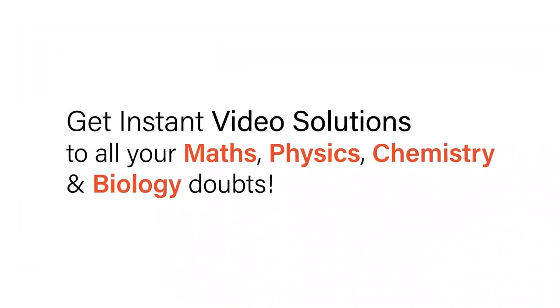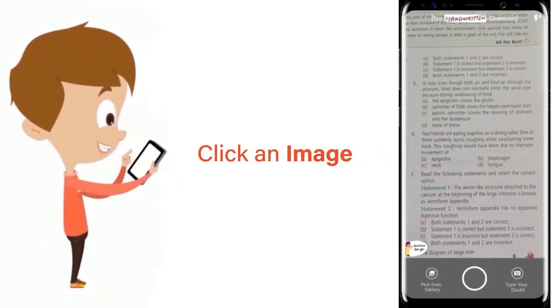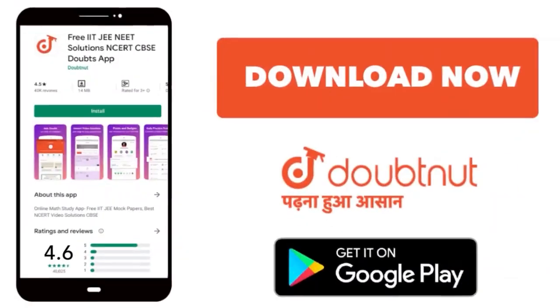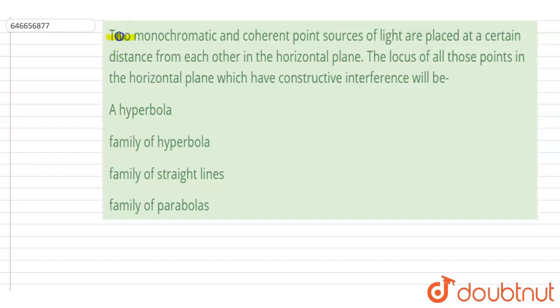With Doubtnut, get instant video solutions to all your maths, physics, chemistry, and biology doubts. Just click the image of the question, crop the question, and get instant video solution. Download Doubtnut app today. Hello everyone. Two monochromatic and coherent